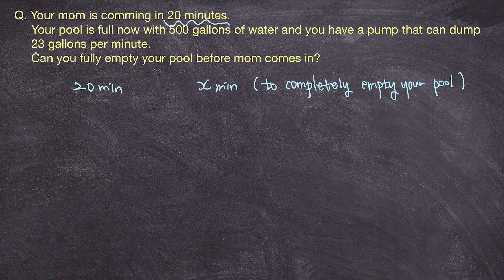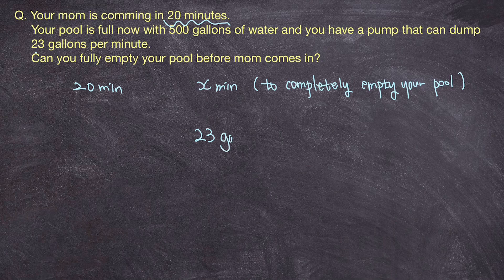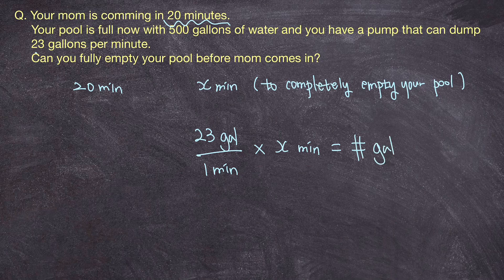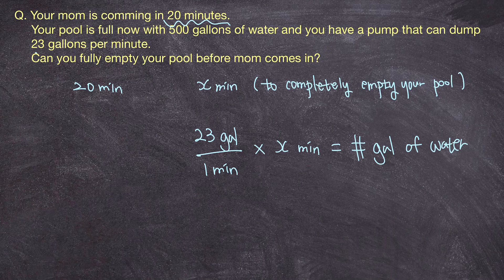So this x minute is the number of minutes it takes for you to completely dump out all 500 gallons of water using your pump that dumps 23 gallons per minute. So it'll take x minutes and our job is to figure out what that x is equal to. Now, with this x value, I am going to try to calculate the amount of water that I can dump in x minutes. So that's going to equal to 23 gallons of water per one minute. That's how much the pump can dump in one minute. And if I multiply x minutes to there, I'll get the number of gallons of water that I can get rid of in x minutes. And that should equal to 500 gallons.